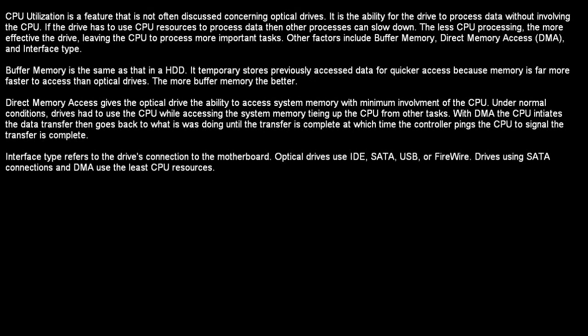CPU utilization is a feature not often discussed concerning optical drives. It is the ability for the drive to process data without involving the CPU. If the drive has to use CPU resources to process data, then other processes can slow down. The less CPU processing, the more effective the drive, leaving the CPU to process more important tasks. Other factors include buffer memory, direct memory access, and interface type.